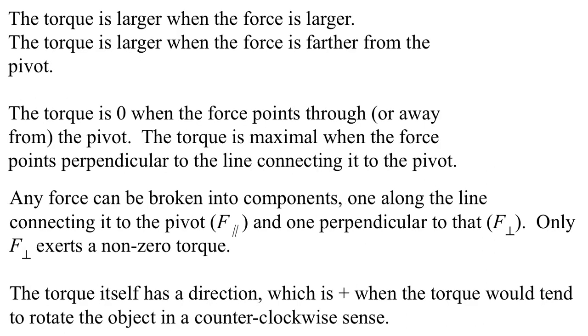From our example from the door, we can see the torque is larger when the force is larger. That makes sense. And it's larger when the force is further from the pivot. That makes sense. But it's zero if the force points through or points away from the pivot itself. And the torque is maximal when the force points perpendicular to the line connecting it to the pivot. All right, that all comes down to that F1 was our best force in that first example.